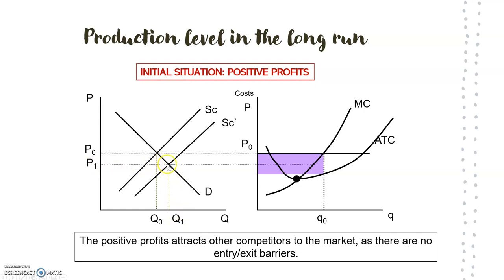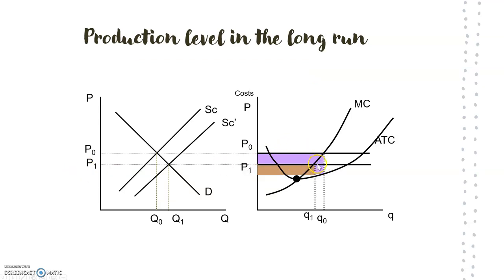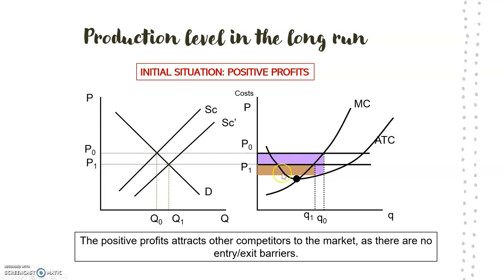This doesn't mean that the demand is going to increase — the demand stays the same because we don't have more consumers in the market. However, a greater number of consumers who wanted to buy the product will be able to do so because the price has decreased. So at this new lower price — which is again given, since the firm is a price taker — the profits decrease a little. Our new profits are shown by the light brown area, and the firm produces at quantity q1, where price equals marginal cost.